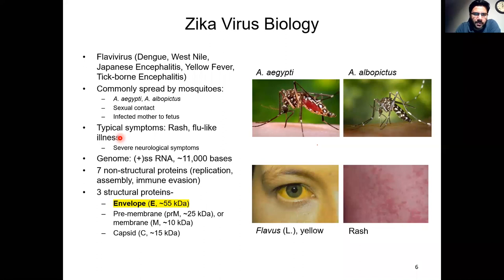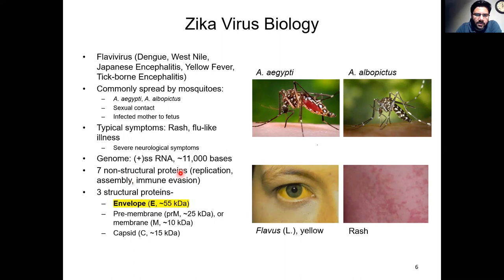Being a flavivirus, Zika has a positive single-stranded RNA genome that encodes seven non-structural proteins and three structural proteins. The non-structural proteins are enzymes involved mainly in genome replication.